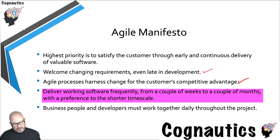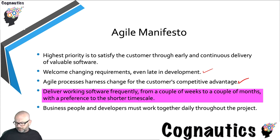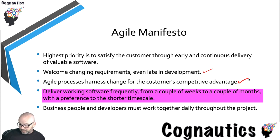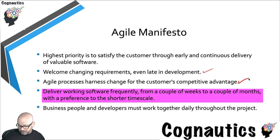Underpinning agile is the notion that you want to give the customer working software as often as possible. So even if the process gets abandoned halfway through and the customer changes their mind, they've still got some useful code. Shorter timescales, as many iterations as possible, and getting those iterations to the customer as quickly as possible.